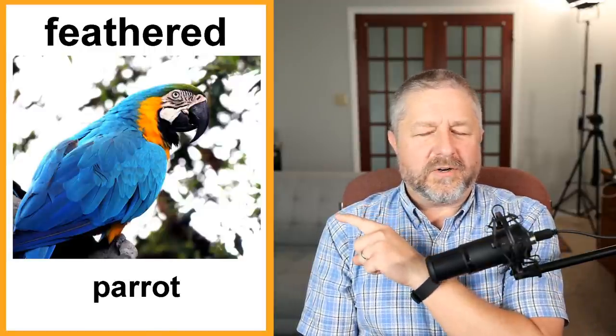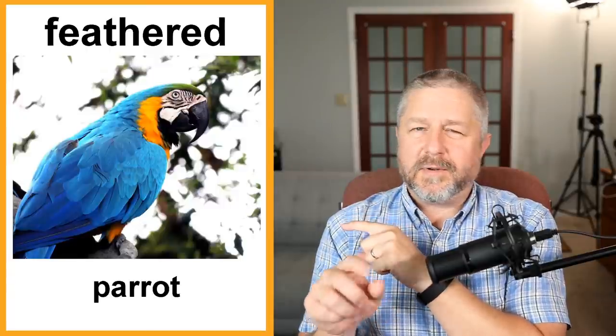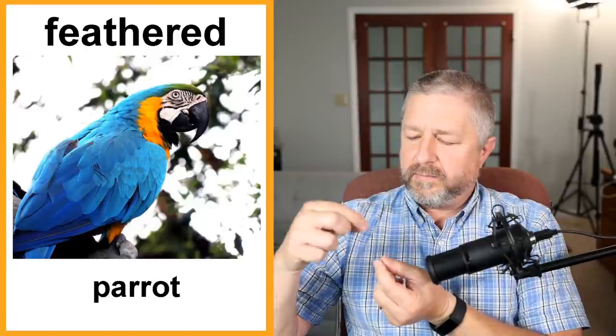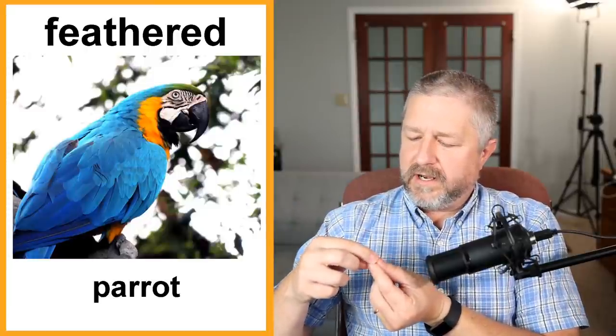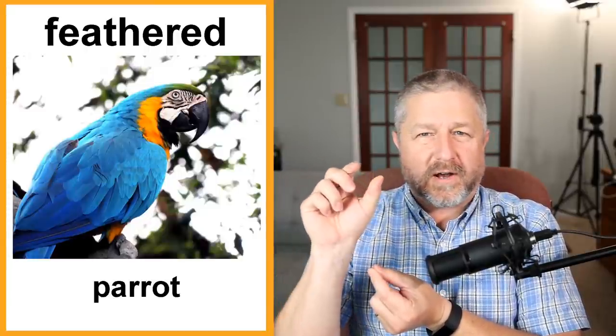Feathered. A parrot is feathered — this is either a parrot or a macaw. A feathered animal has feathers. Things like ducks and all birds that fly have feathers — chickens have feathers too. Feathers are a long piece of a hard substance with soft hair-like things coming off of it. So this parrot is definitely feathered.